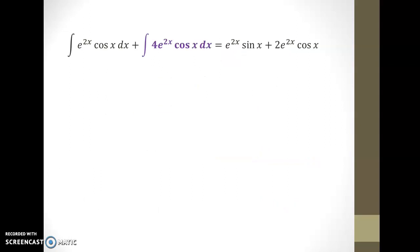But actually, having a repeated term is what we want, because I can move it to the left-hand side and add it to the original integral I was trying to solve. These are like terms. Because we have one integral of e to the 2x cos x that we are adding to four more of these same integrals, we can collect them and say there are five of these integrals of e to the 2x cos x.